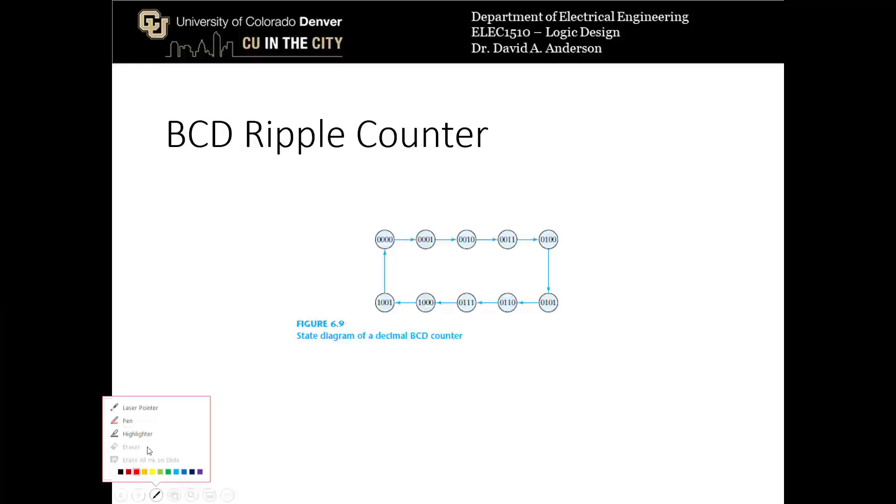So this type of counter cycles through these states, first 0, 0, 0, 0 for BCD number 0, all the way through 1, 0, 0, 1 for BCD number 9, and then it starts over from 0. So we need to design a different type of ripple counter that moves instead from state 1, 0, 0, 1 to 1, 0, 1, 0 like it would in a normal ripple counter. We want to get rid of that and have it move to state 0, 0, 0, 0.